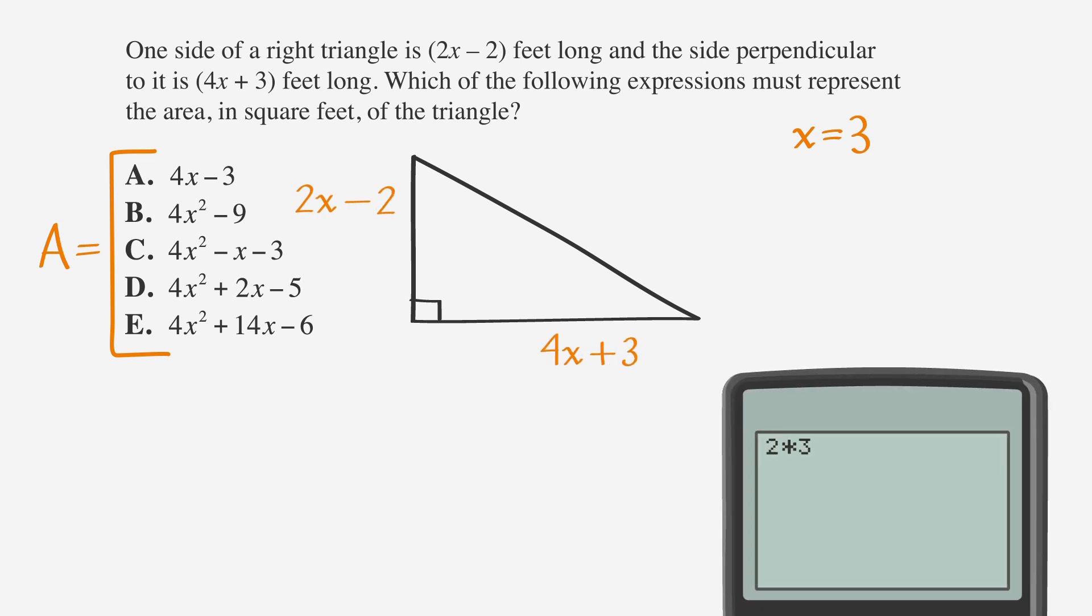Using a calculator, we enter 2 times 3 minus 2. That's 4. And the side perpendicular to it is 4 times 3 plus 3 feet long. That's 15.